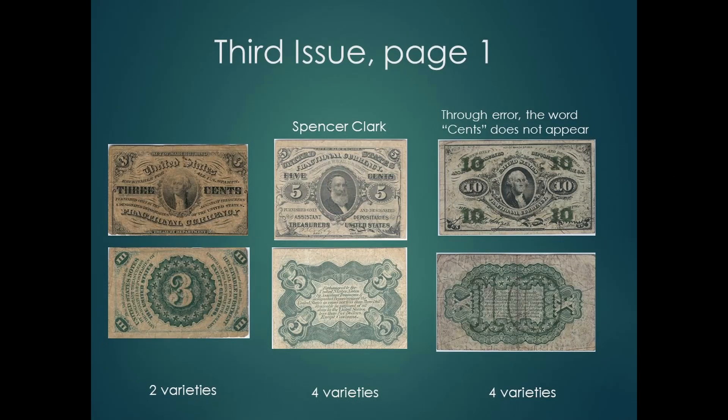For the third issue and remaining issues, various portraits were used, along with allegorical figures. Notes 10 cents and higher are signed, some by hand. The third issue has the largest number of design variations and number of denominations. Each denomination is a different size. All the notes were made by the Treasury. Most notes have green backs, but there are some notes with red backs, except for the 3-cent notes.